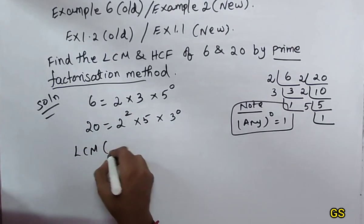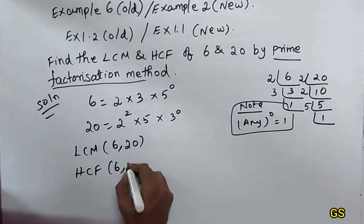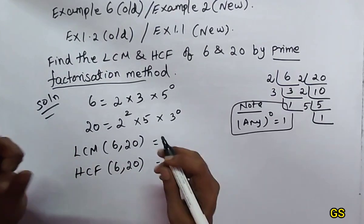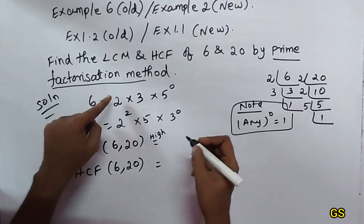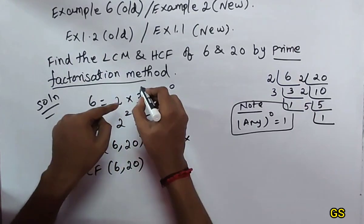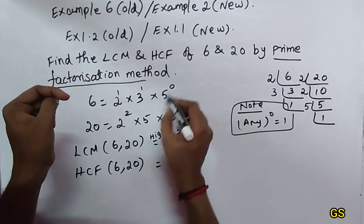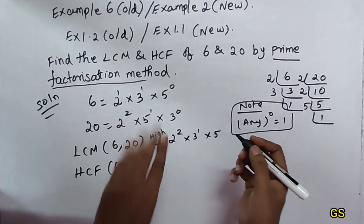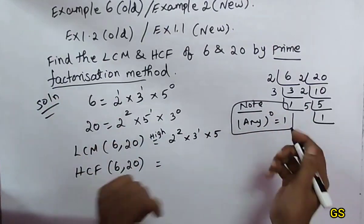LCM of 6 and 20. For LCM, we take the highest powers of all prime factors. LCM means Least Common Multiple, but the rule is to select the highest power of each prime. For 2: highest power is 2 squared. For 3: highest power is 3 power 1. For 5: highest power is 5 power 1.